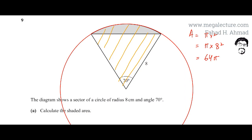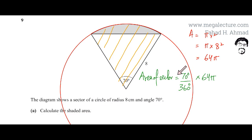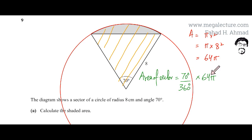Once I have this area, the next step is to find the area of the sector. The sector is a small portion of the bigger circle. The full circle has 360 degrees; this sector only has 70 degrees. So the area of the sector is proportionally 70 divided by 360, multiplied by the area of the entire circle, which is 64 pi.